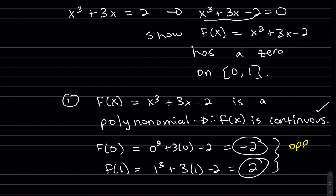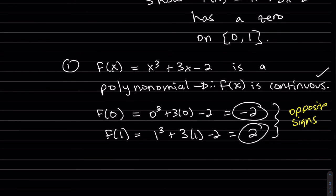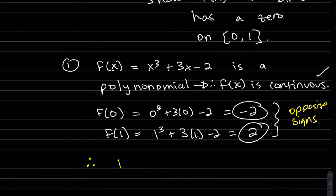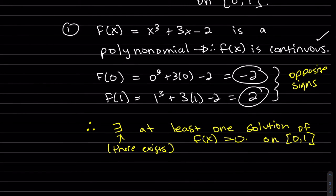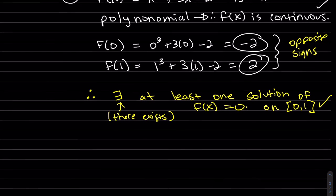They do have opposite signs. So since both conditions are met, therefore — that's my therefore symbol — there exists — that's my there-exists symbol — a solution. And that's the end; we proved it.